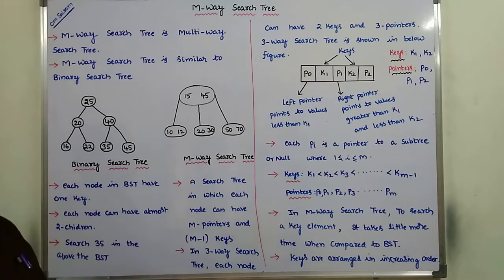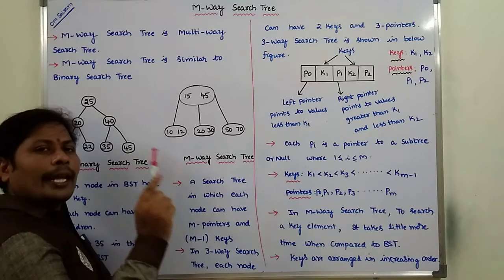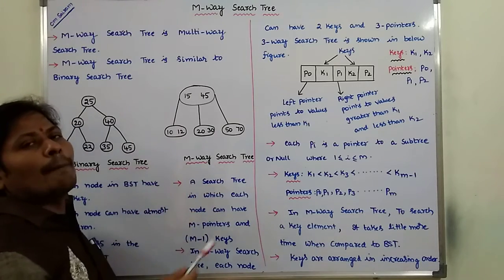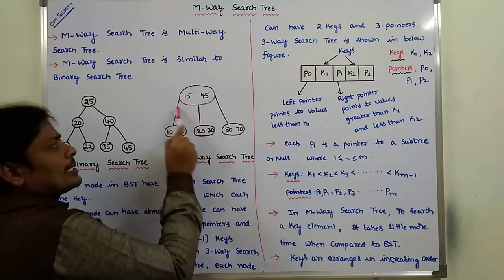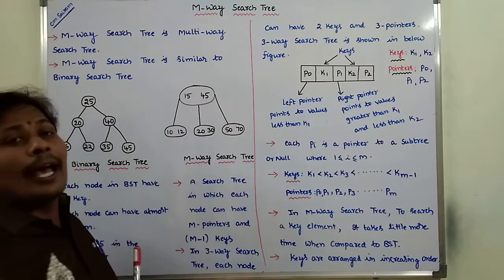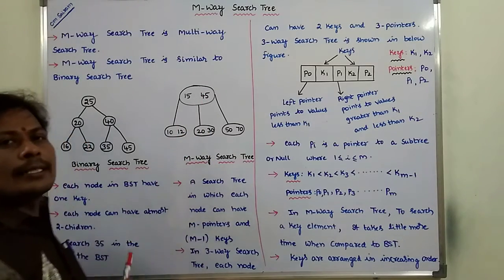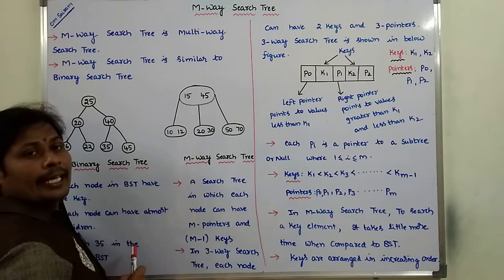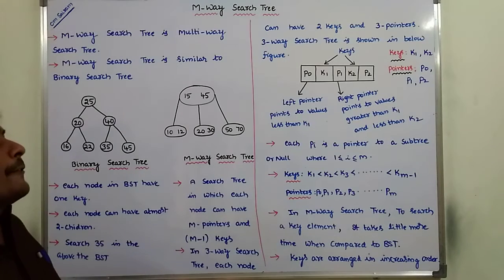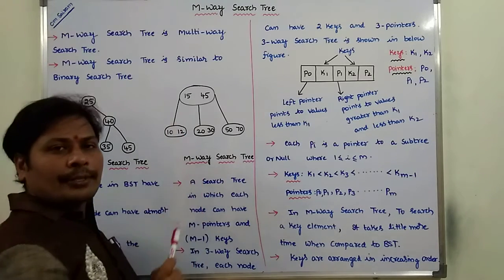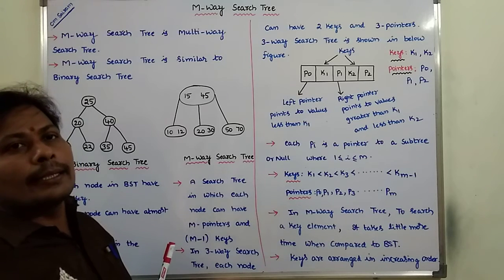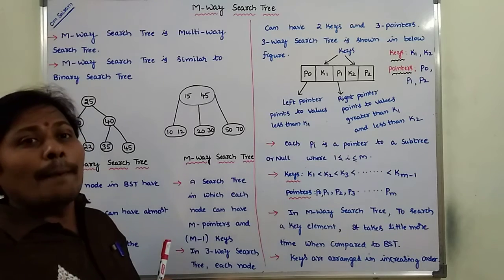Now consider the M-Way Search Tree. M-Way Search Tree means a search tree in which each and every node can have M number of keys and M minus 1 number of key elements and M number of pointers. This node contains 2 key elements: 15 and 45. This node contains 2 elements: 10 and 12. This node contains 2 key elements: 20 and 30. This node contains 2 key elements: 50 and 70.